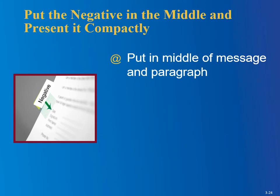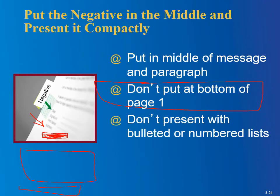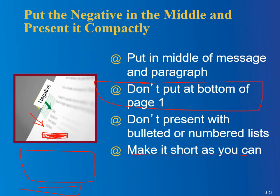We mentioned that you can put negatives in the middle somewhere. Don't put it at the bottom of page one — if you've got a multi-page document, the bottom of that first page will still stand out even if it's technically the middle of the document, so don't put it there. Don't present negative information with bulleted or numbered lists — if I said 'there are five reasons you're going to fail my class' and then listed them, that would really emphasize it. Make it as short as you can — nobody wants to dwell on it and you shouldn't either. Give it only once — again, good advice.